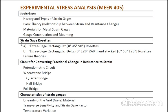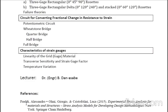Next, we have strain gauge rosette. Under it, we have the different types. And then we're also going to look at failure theories. The third topic is circuit for combating fractional change in resistance to strain. We have two major circuits: potentiometric and Wheatstone bridge circuit, which we are going to look at later. And lastly, we have characteristics of strain gauges. Under it, we have linearity, transverse, and temperature variation.